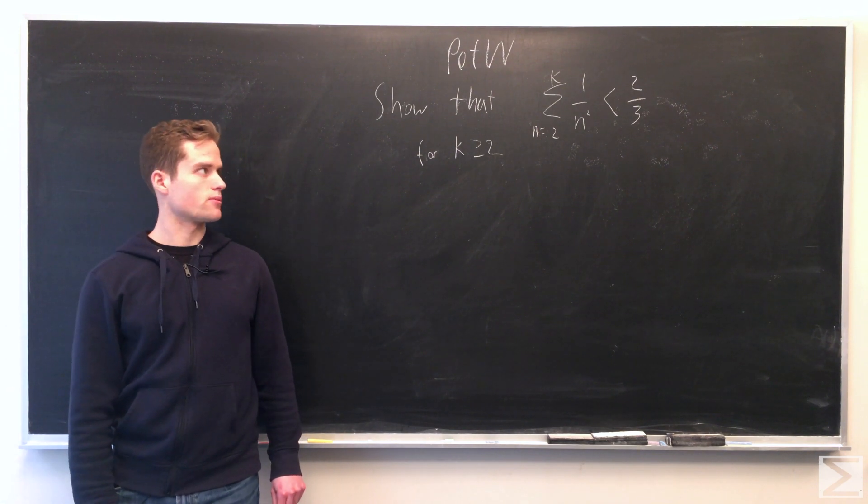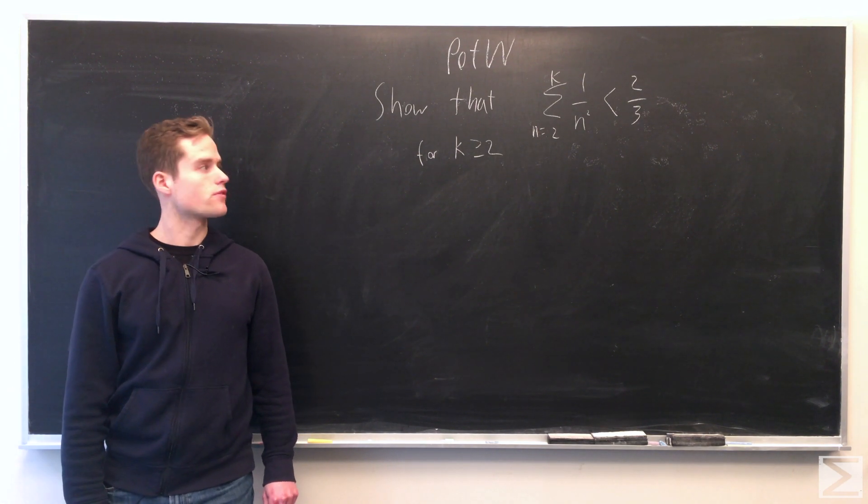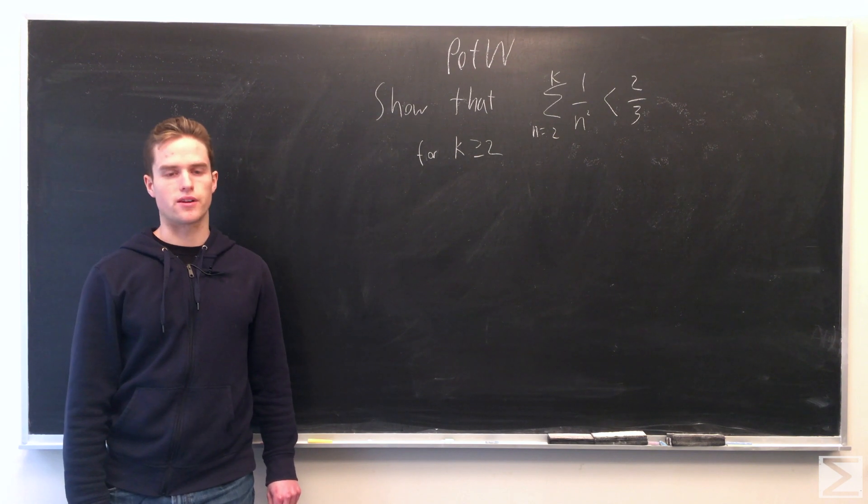Welcome to Center of Maths Problem of the Week. For this week's problem, we want to prove that the sum from n equals 2 to k of 1 over n squared is less than 2/3 for all k greater than or equal to 2.